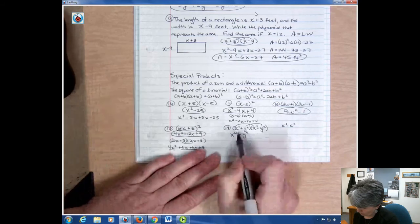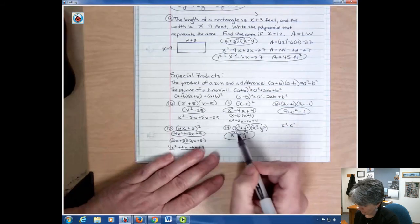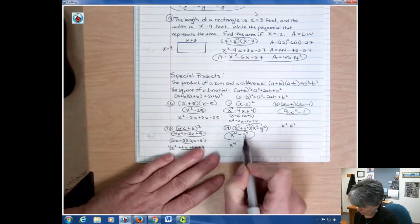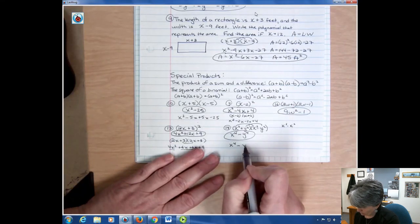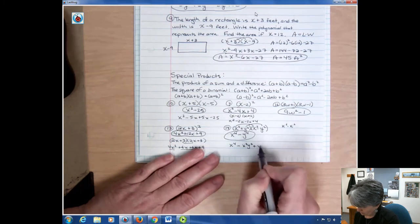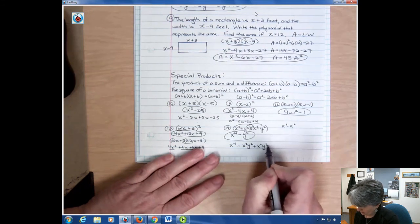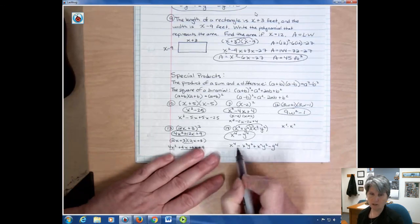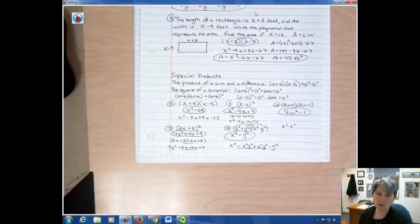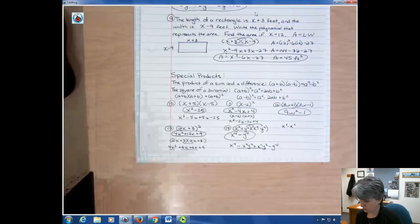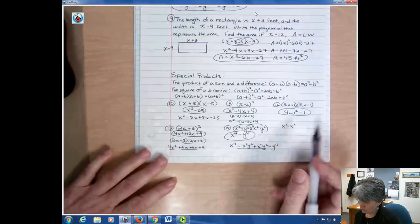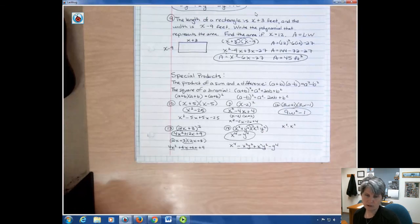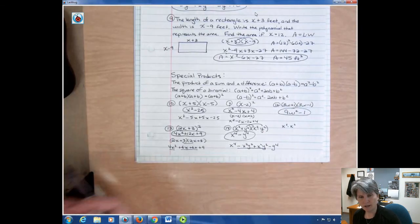If I wanted to FOIL it out, I would see that my inside term, I'd get x to the fourth for my first term. My outside term is negative x squared y squared and my inside term would be positive x squared y squared and then negative y to the fourth. And you can see that these two things are opposites. So you might ask, well, how come you didn't write that as y squared x squared? Because that's what it kind of looks like. Well, it doesn't matter. You can change the order there, but typically we write them alphabetically so that they're all consistent. So I just wrote the x squared first.